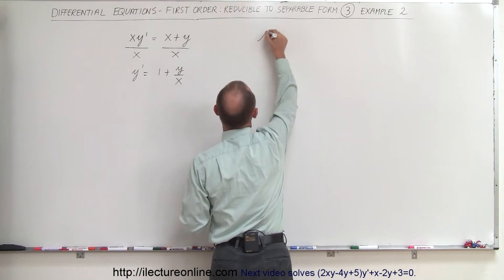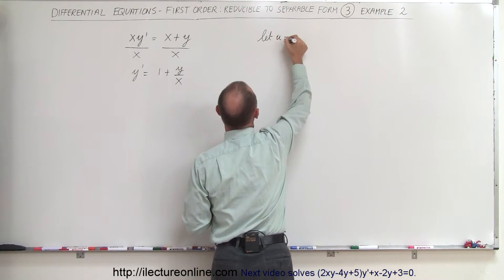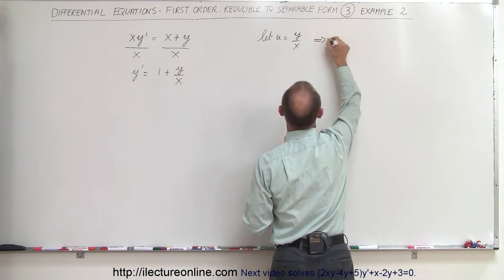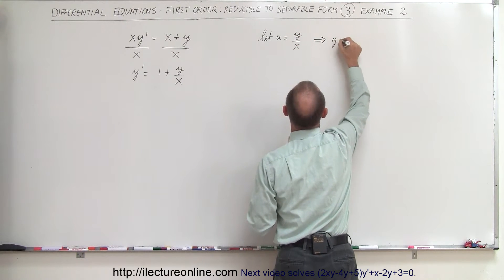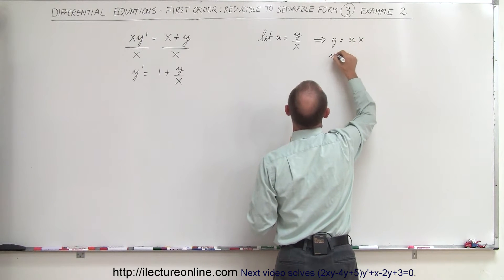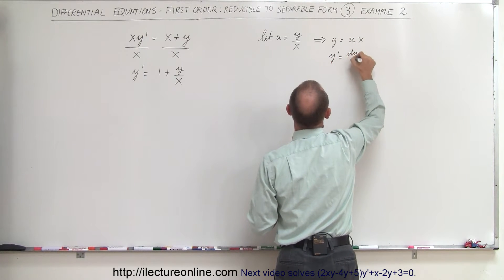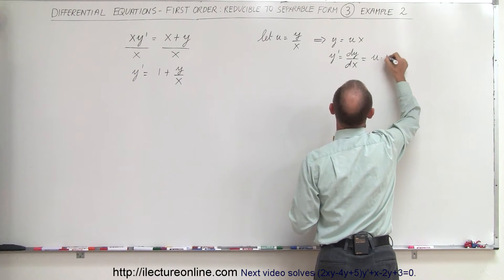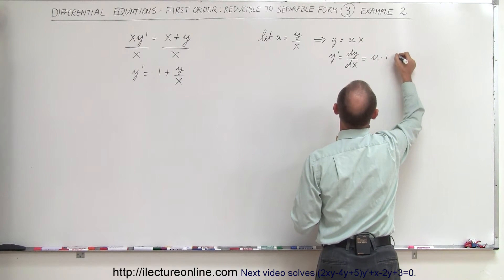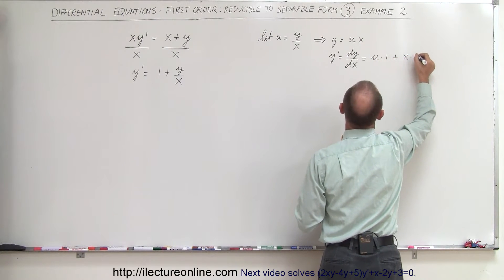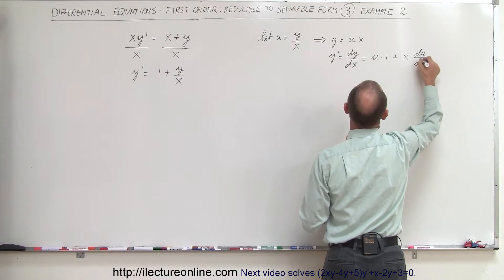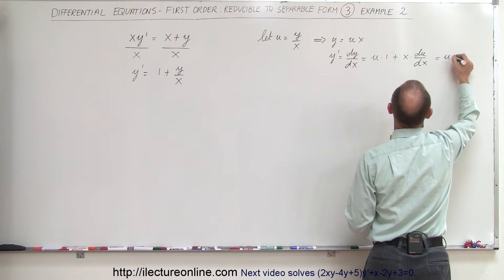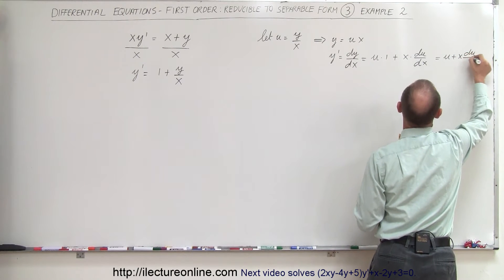We let u equal y over x. When you do that, you can say that y is equal to u times x, and y prime — which is the same as dy/dx — is equal to the first times the derivative of the second, plus the second times the derivative of the first, which is du/dx. In other words, dy/dx can be written as u plus x times du/dx.